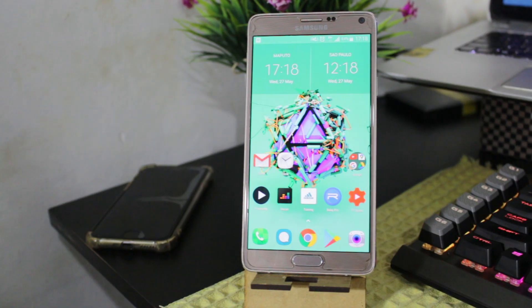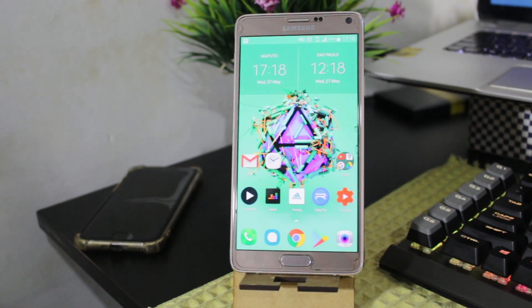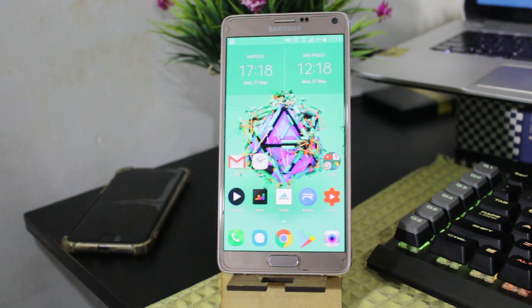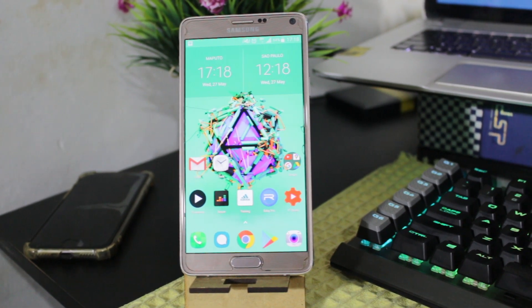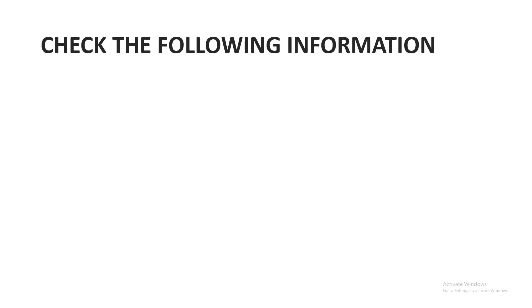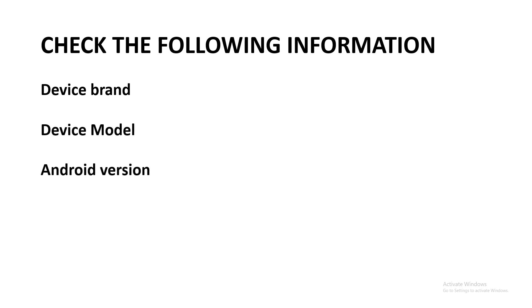For this tutorial, I'm going to be using a Samsung Galaxy Note 4, but you can follow the steps for the majority of Android devices. Once you have decided that you want to install a custom ROM, these are the things you should check on your device: device brand, device model, Android version, device type and product variation.